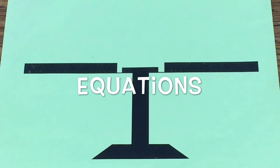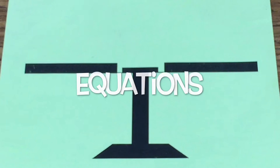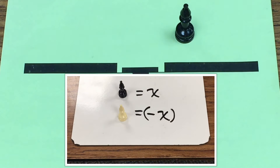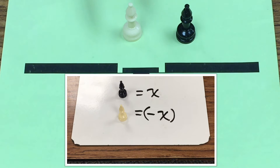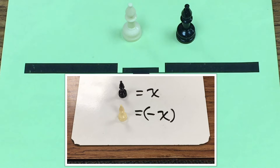In this video I'm going to be using hands-on equations to solve the opposite of 3x plus 2 equals the opposite of 10 plus x. The first thing I need to do is set up the problem. I have black pawns that are going to represent x, and white pawns that are going to represent the opposite of x. It's really important to understand this is not positive/negative — this is just x and the opposite of x.